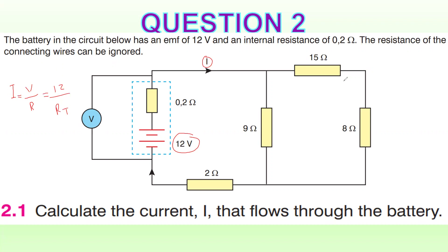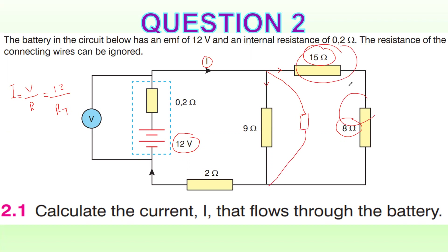To get total resistance, first step: we are adding 15 ohms and 8 ohms. As you see, the current comes in and then splits through different resistors. We add 15 and 8 ohms first, making one resistor of 23 ohms. These two are parallel to each other, so we calculate the parallel combination. After that, we add 2 ohms and 0.2 ohms.